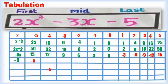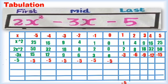Next is the constant term, minus 5. That is the last one and it is a constant. Wherever the column is, we have to put minus 5 invariably, whatever may be the value of x. I am putting minus 5 in each and every column of that constant row. That's why it is called the constant row.